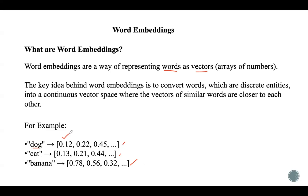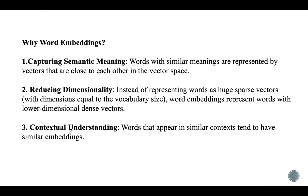So why do we need word embeddings? The first reason is capturing semantic meaning — words that are semantically similar will have similar vector representations. For example, 'king' and 'queen' might have similar embeddings because they share similarities in meaning and context. The second reason is reducing dimensionality — traditional methods like one-hot encoding lead to high-dimensional vectors that are sparse, meaning mostly zeros.